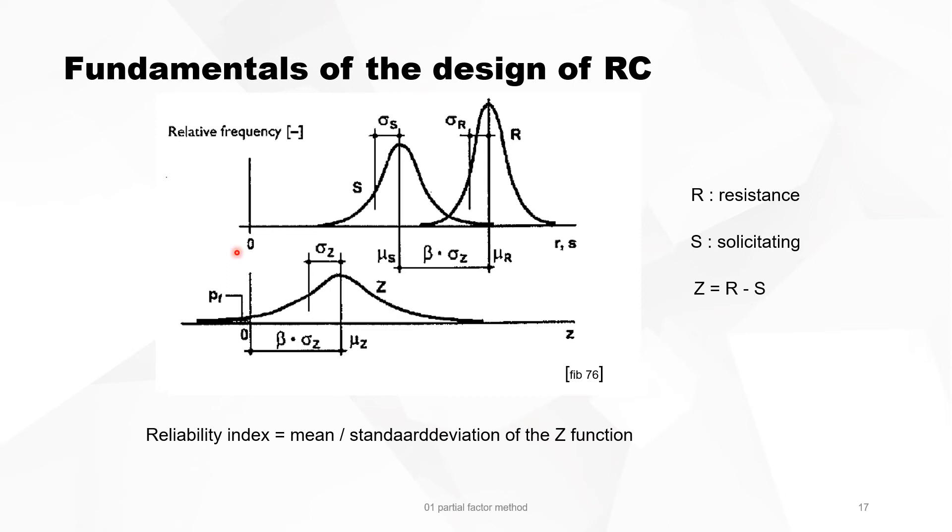I can explain it more easily by means of a graph. On the y-axis you see the relative frequency. When you have a resisting force, for instance the compressive force of concrete, you have a mean value if you take a lot of tests, a standard deviation, and a distribution looking like this.